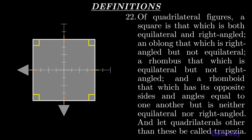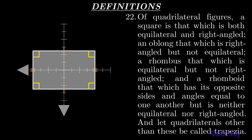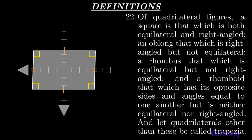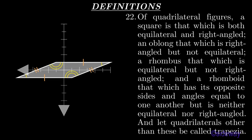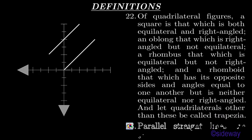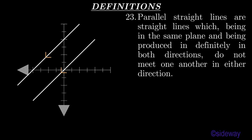Of quadrilateral figures, a square is that which is both equilateral and right-angled; an oblong that which is right-angled but not equilateral; a rhombus that which is equilateral but not right-angled; and a rhomboid that which has its opposite sides and angles equal to one another but is neither equilateral nor right-angled. And let quadrilaterals other than these be called trapezia. Parallel straight lines are straight lines which, being in the same plane and being produced indefinitely in both directions, do not meet one another in either direction.